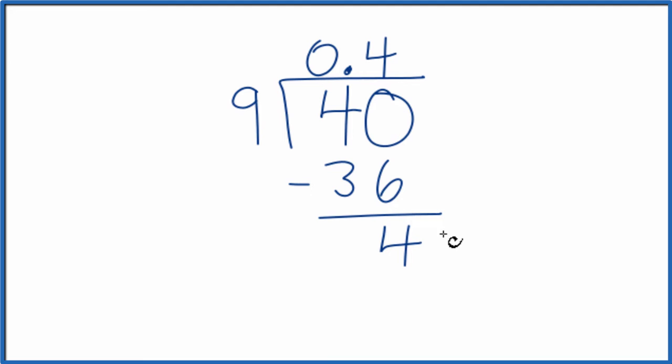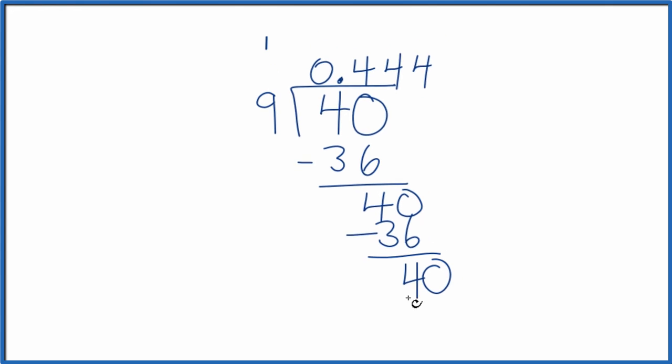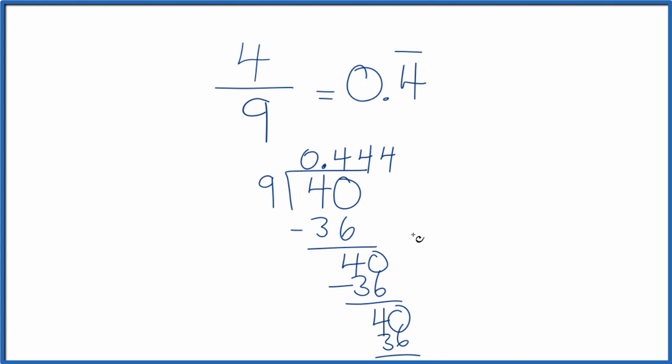So again it doesn't go into 4 but if we call this 40 we can move over 1 and 4 times 9 is 36 again. And we end up with 4. And you can see what's going to happen. We could call this 40 and we could move over 1. 4 times 9, that's 36. And we can just keep going. So this is why we call this a repeating fraction.